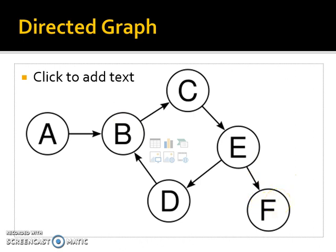It could be in a food chain. A eats B. B eats C. So predators and prey. So with those directed graphs, you might often see that called a digraph.